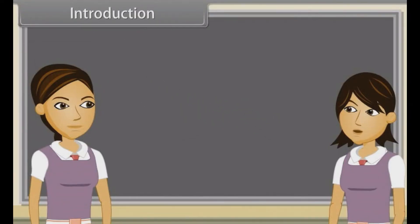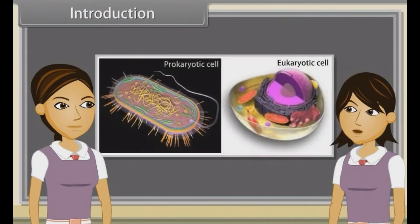We have discussed cell theory, structure and functional regions of cell, types of plant and animal cells, structure of plant and animal cells, prokaryotic cells and difference between plant and animal cells already.